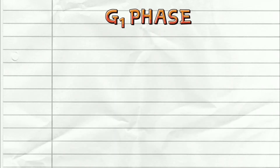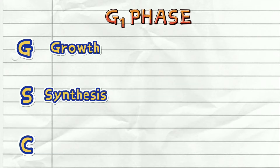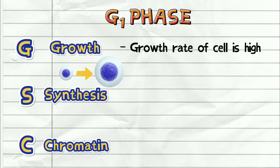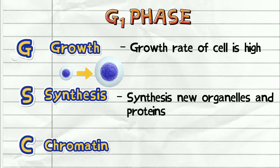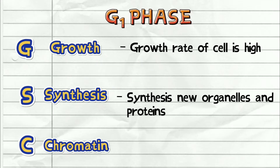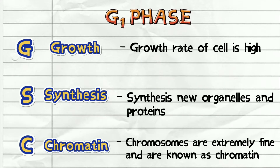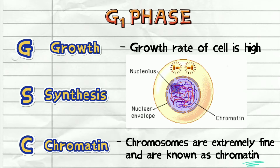In G1 phase, you just need to remember GSC, which stands for growth, synthesis, and chromatin. Growth means the cell actually grows bigger and starts to synthesize new organelles and proteins, so that when the cell eventually divides, it can return back to its original size and the organelles can be evenly split. For C — chromatin — the chromosomes at this stage are still very fine and are known as chromatin, meaning the chromosomes here are still very thin, like hair, and will only become the thick chromosome we usually see later on.